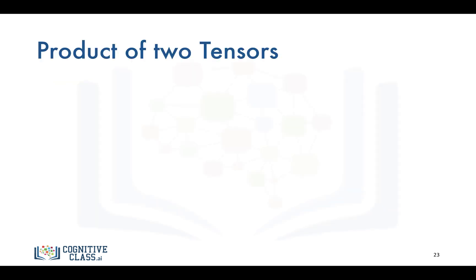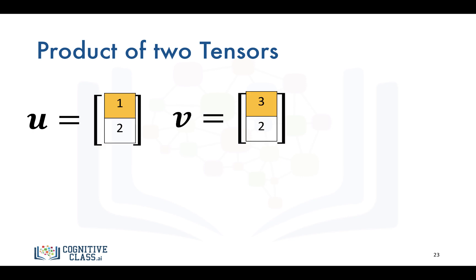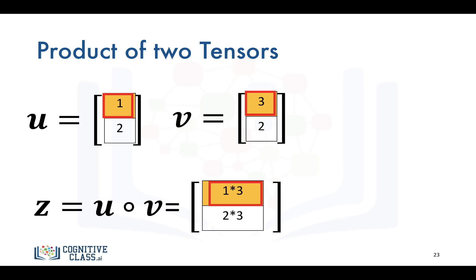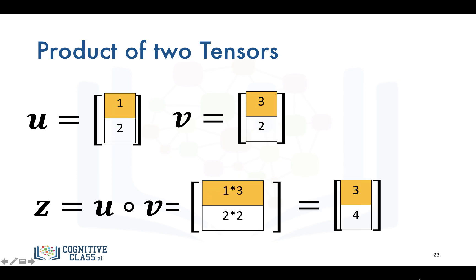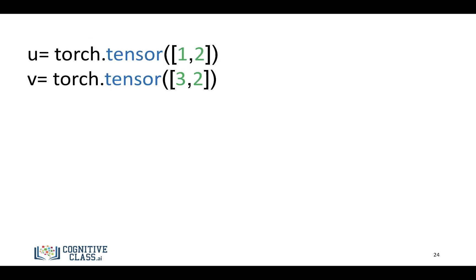The product of two tensors is pretty different — it's the Hadamard product. The first element of Z corresponds to the first element of U multiplied by the first element of V, and the same for the second element. In PyTorch, we define tensor U and tensor V, we simply multiply them, and the result is the Hadamard product.